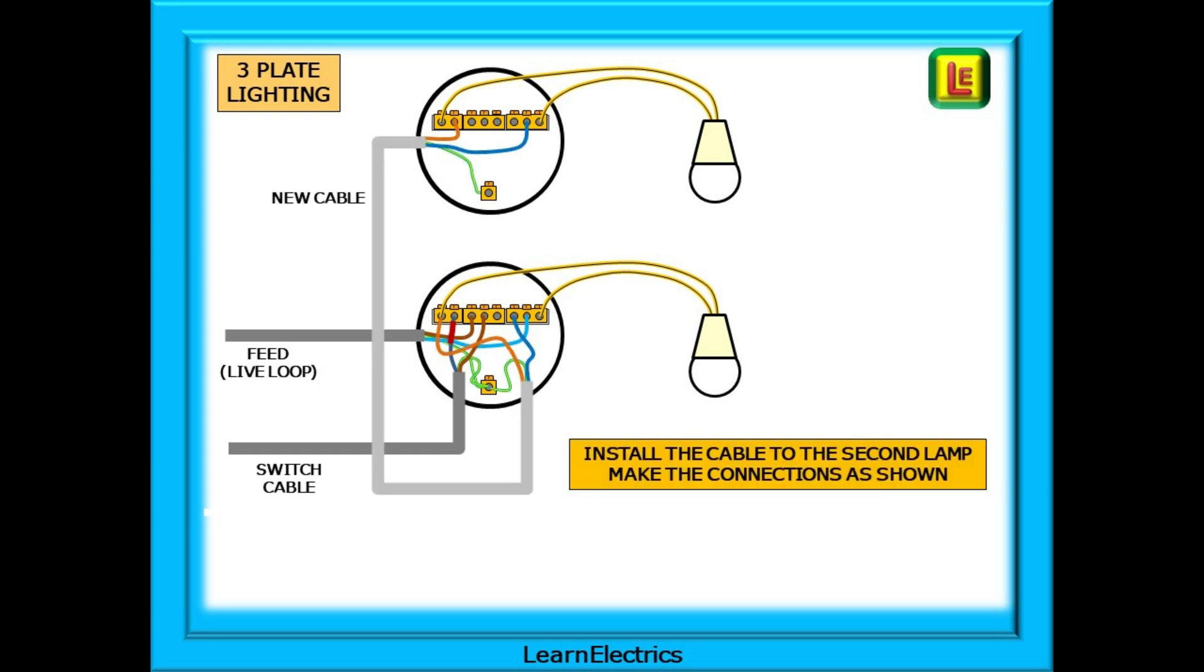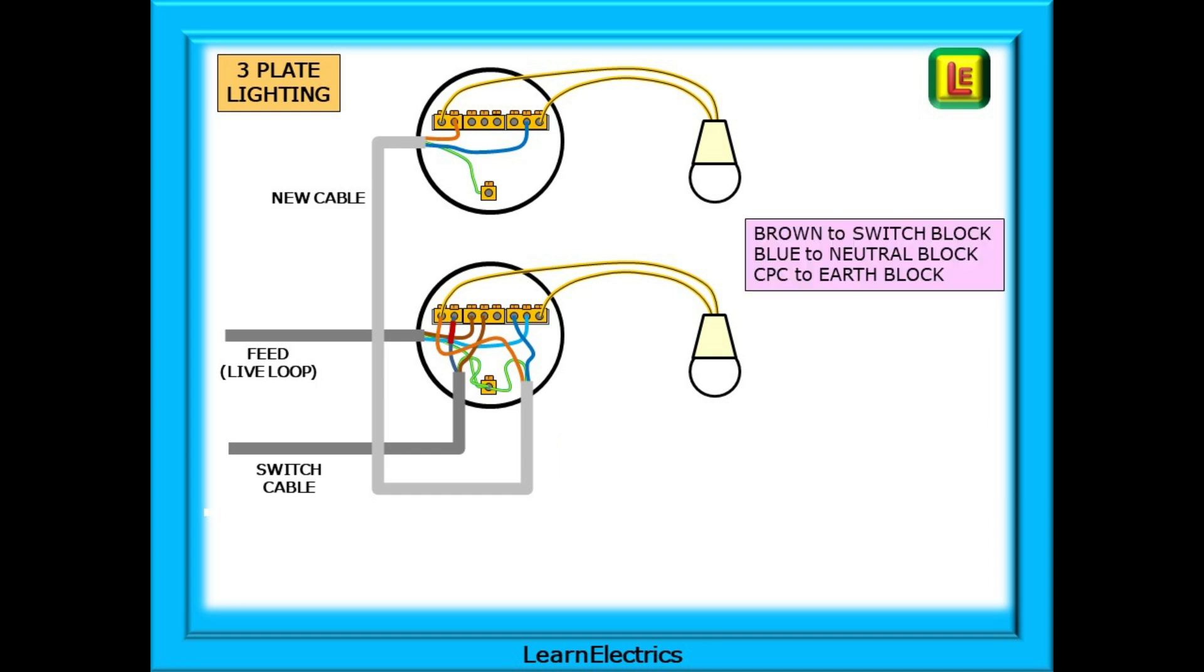Install the new cable now in the same manner as for the two-plate circuit. Note that the live loop conductors are not taken to the new second ceiling rose. The middle block of three holes is left unoccupied on the new ceiling rose. The brown will go into the two-hole switch block on both ceiling roses. Then we can connect the blue into the outside block of three holes, the neutral block, on both ceiling roses, and finally connect the CPC into the earth terminal on both to complete the installation.